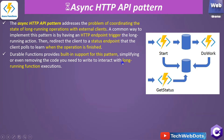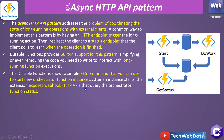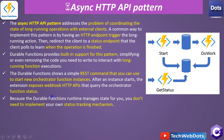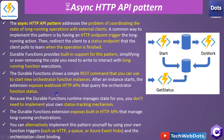Durable functions provide built-in support for this pattern, simplifying or even removing the code you need to write to interact with long-running function execution. Durable functions expose a simple REST command to start a new orchestration function instance. After an instance is started, the extension exposes webhook HTTP APIs — the status URI — that query the orchestrator function status, giving us the live status of our long-running queries. Because the durable function runtime manages state for you, you don't need to implement your own status tracking mechanism. You can alternatively implement this pattern yourself using your own function triggers such as HTTP, a queue, or Azure Event Hub with the orchestration client binding.